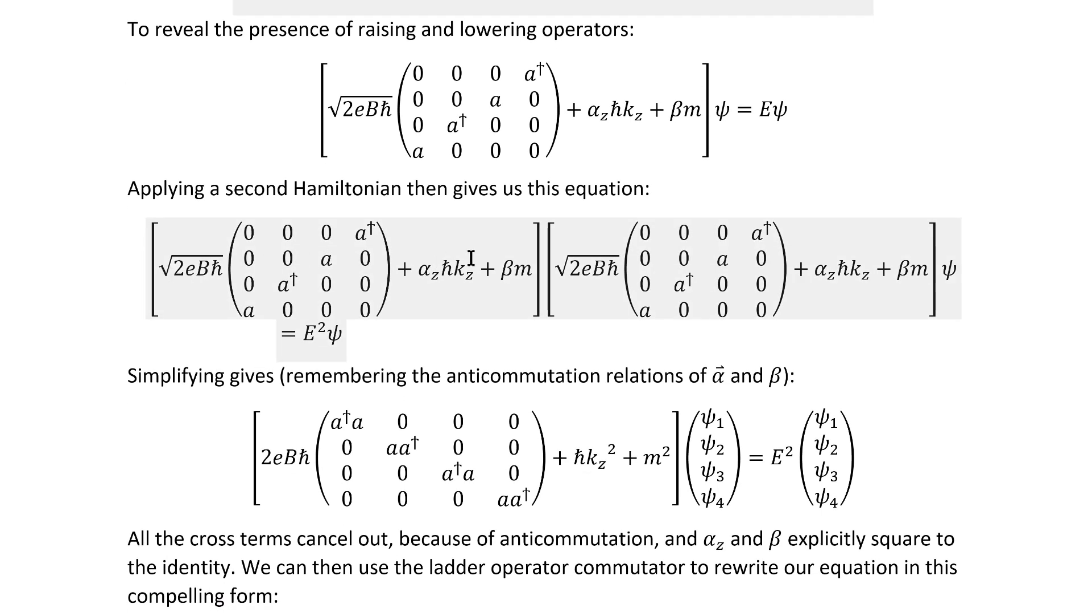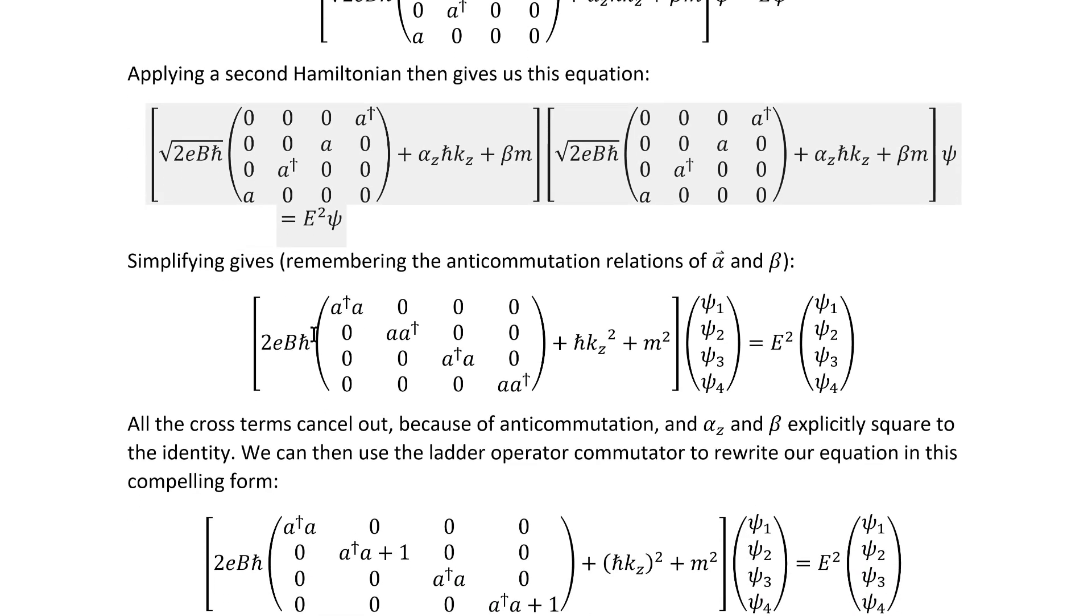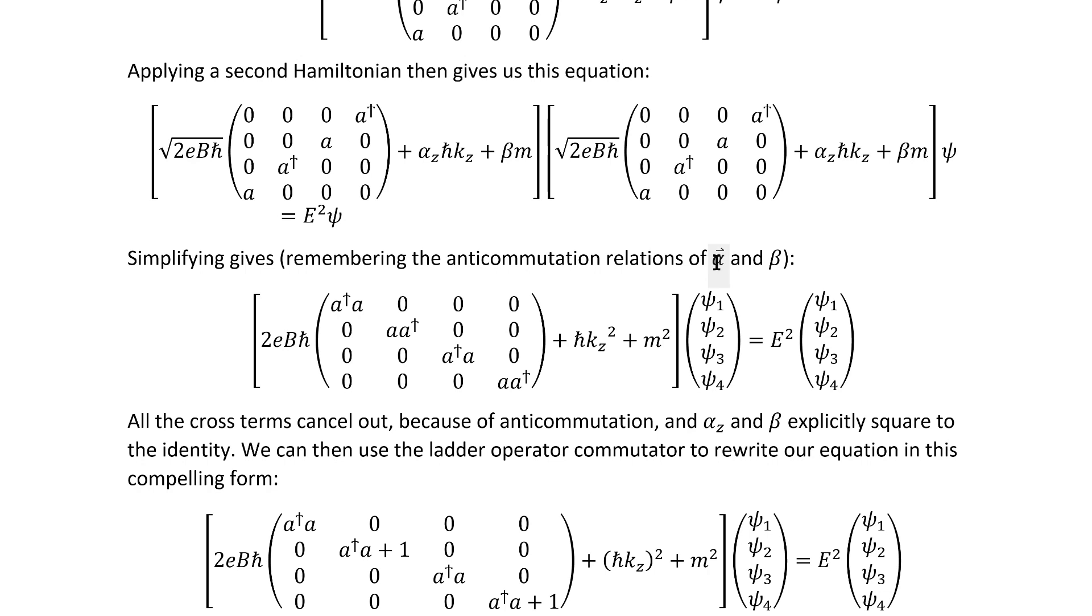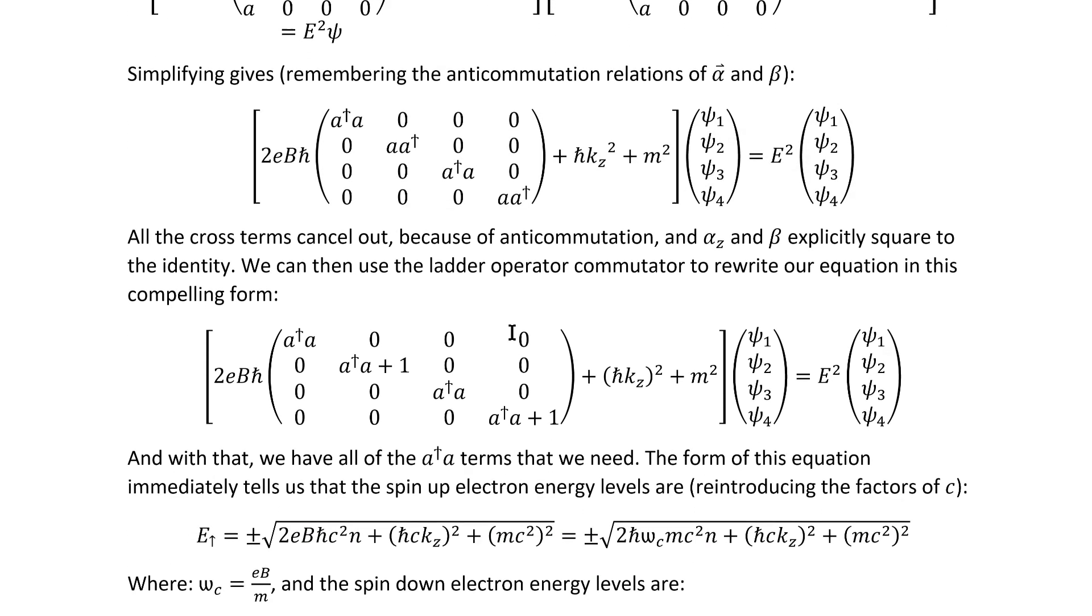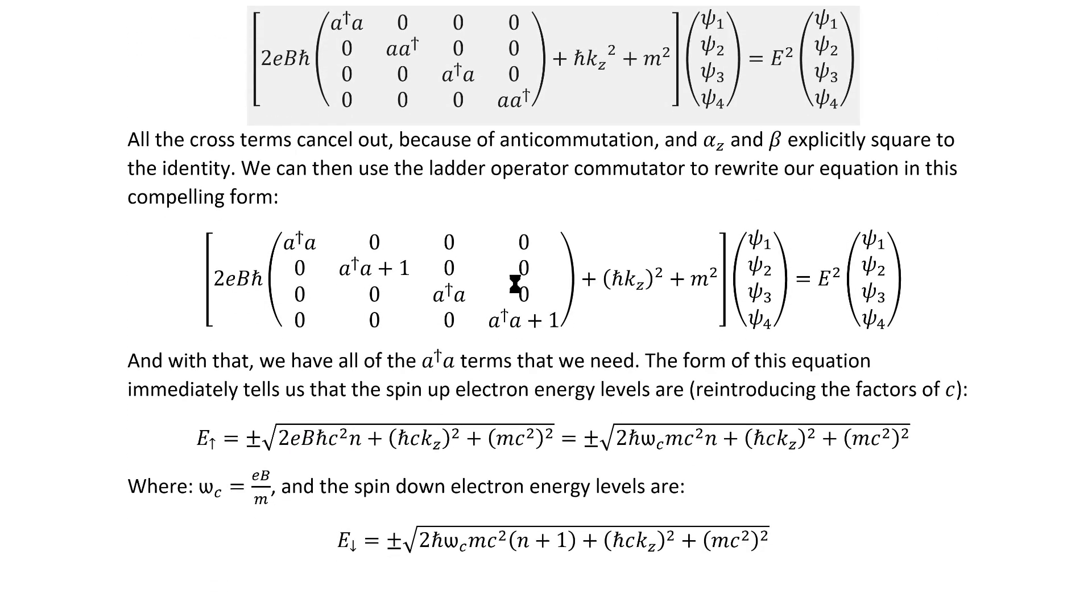We can apply another copy of the Hamiltonian to the effect of getting an E squared on this side of the equation instead of an E and then multiply it out. If we remember that alphas and betas anticommute and square to one we arrive at this relatively simple result. We see some of the A dagger A products that we need but these two aren't quite in the right form. If we use the anticommutation relations to fix that at the cost of a one term we arrive at this result here.